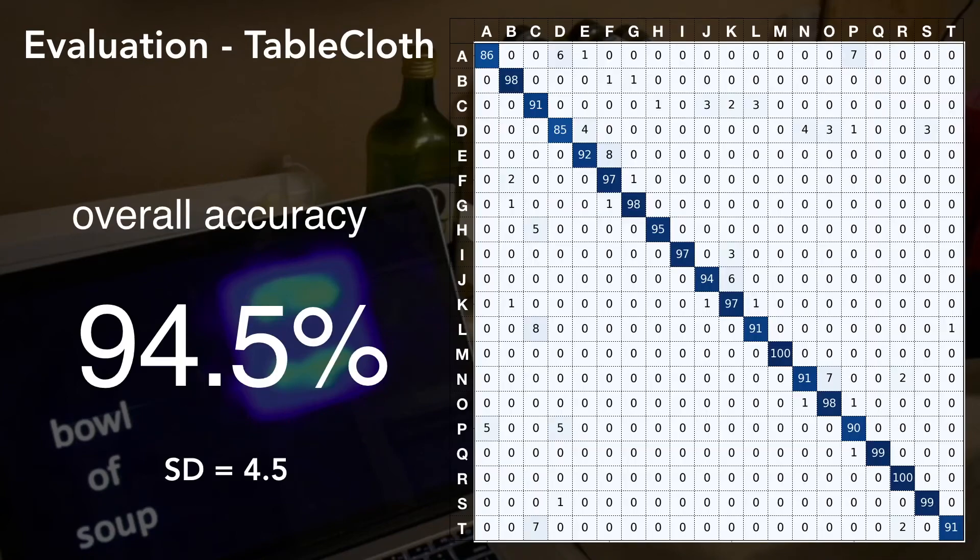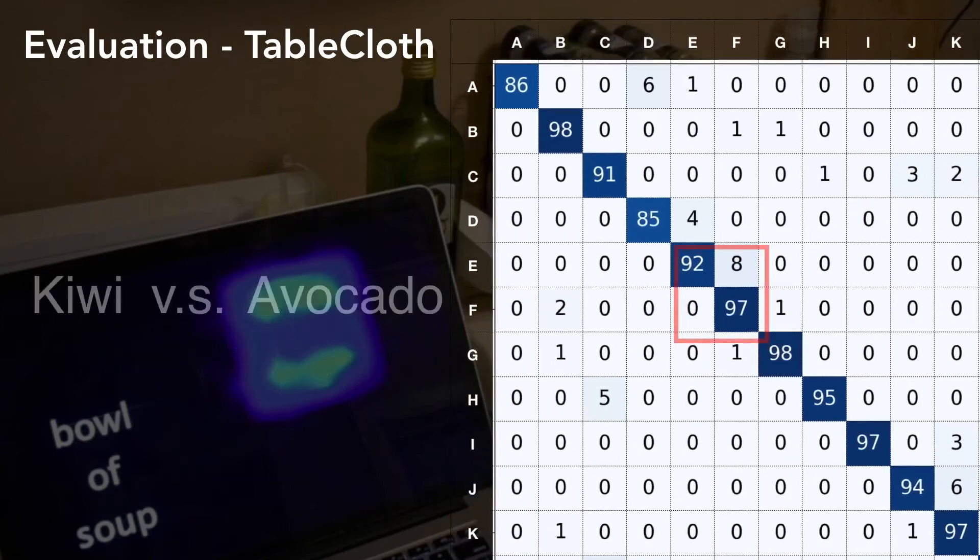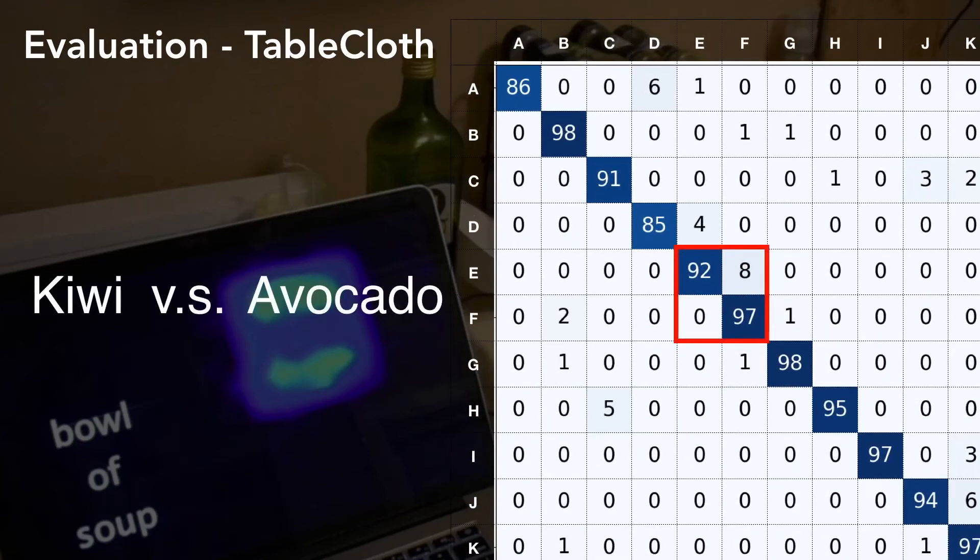In turn, our system can achieve an overall accuracy of 94%. This is an encouraging result, especially for the items which have a similar shape, but have a different content or material, such as kiwi and avocado.